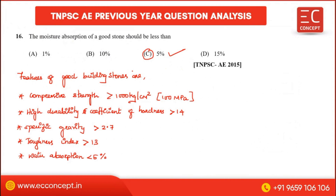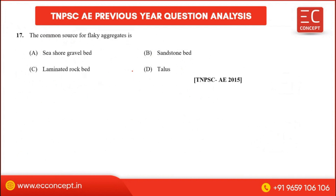These are the most important features of good building stones. Next question: what is the most common source of flaky aggregate? The answer is laminated rock.